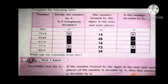Now, what can we conclude from this children? Yes, we got the divisibility test for 4. If the number formed by the digits in the tens and units places is divisible by 4, then that number is divisible by 4. Children, you have to check the number formed by the units and tens place. If that number is divisible by 4, then the whole number will be divisible by 4.